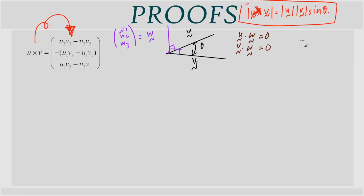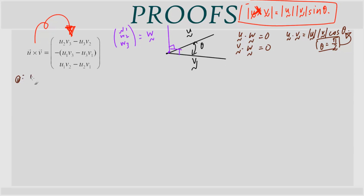From the scalar product formula, u·w = |u||w|cosθ = 0 when θ = π/2. So the two equations are: u1w1 + u2w2 + u3w3 = 0 (equation 1), and v1w1 + v2w2 + v3w3 = 0 (equation 2).